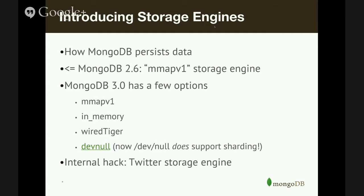There's an in-memory storage engine which doesn't persist memory to disk at all. There's WiredTiger. There's actually a DevNull storage engine which is not documented — but now we know that DevNull does in fact support sharding. And even internally, somebody at one of the MongoDB hackathons put together a storage engine that used Twitter: every time you inserted a document, it would shoot out a tweet on a certain account; every time you updated a document, that tweet would get updated. You could delete tweets. So you can do very crazy things with the storage engine API.